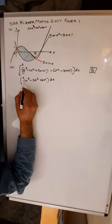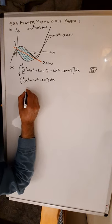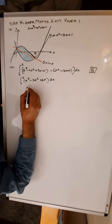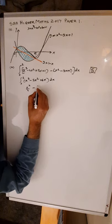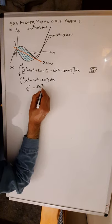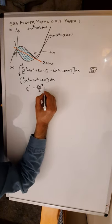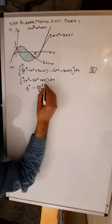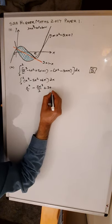Now integrate: add 1 to the index and divide by the new index. That gives x to the 4 over 4, minus 5x cubed over 3, plus 6x squared over 2, which simplifies to 3x squared.